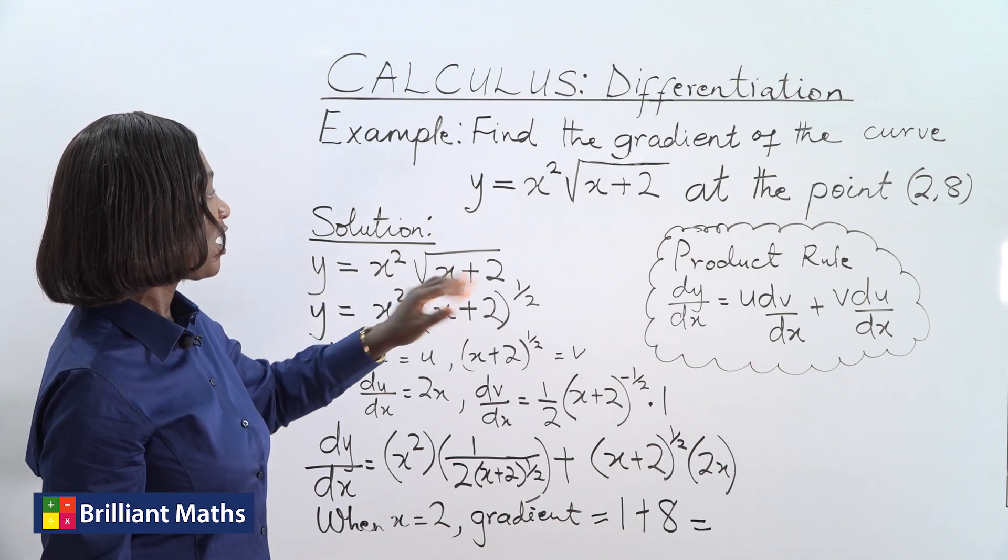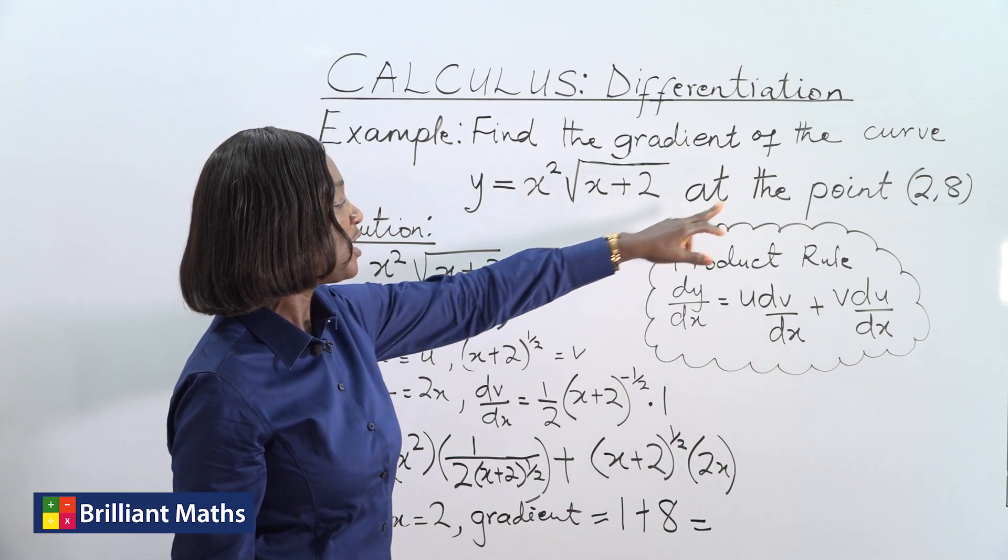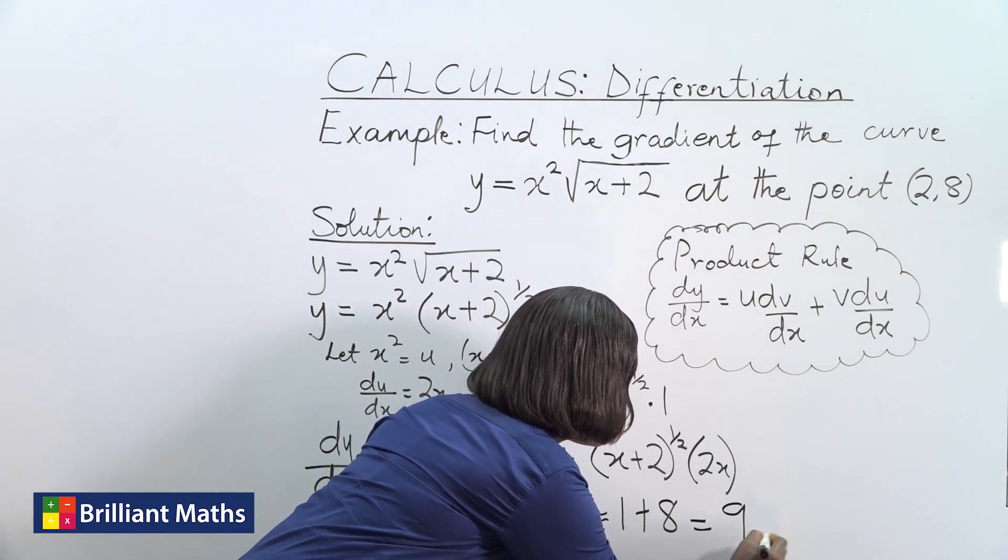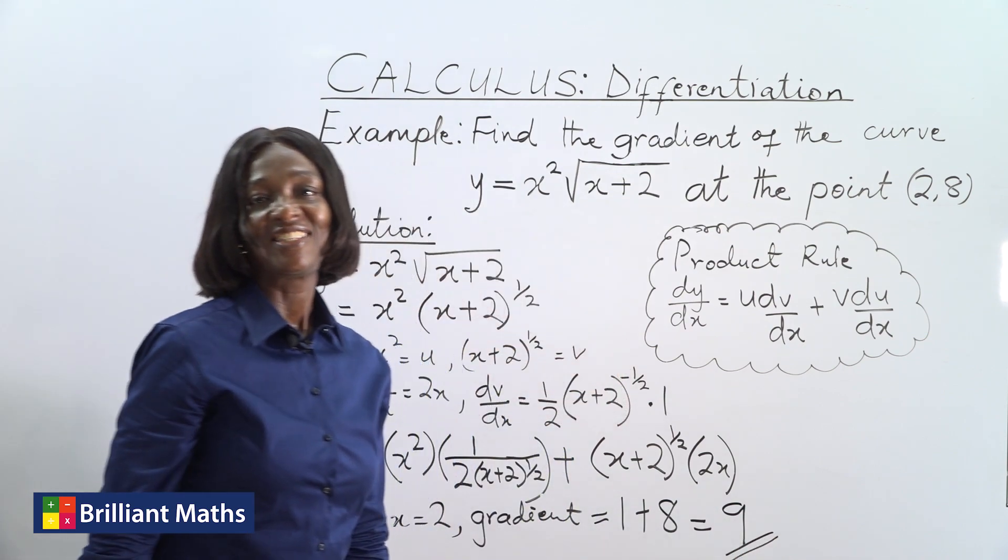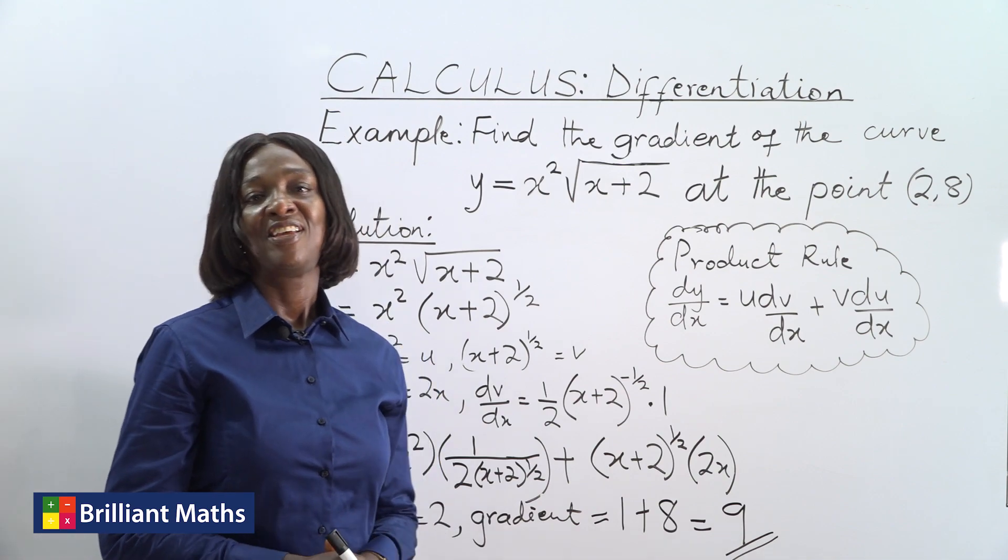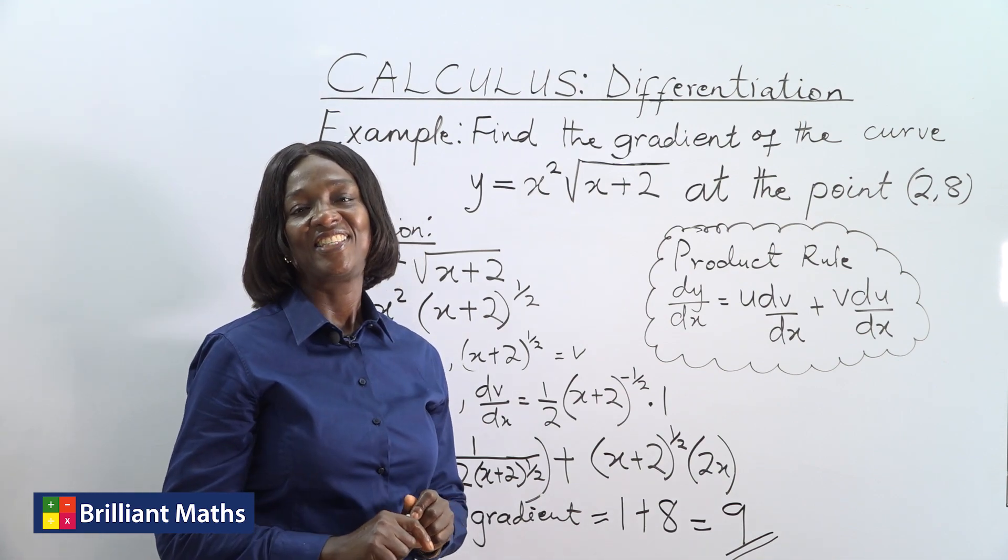So finally, the gradient of the curve y equals x squared times root x plus 2 at the point (2, 8) is equal to 9. It's as simple as that. Just take your time and go over it. Maths is fun and you can excel in it.